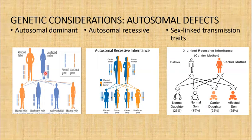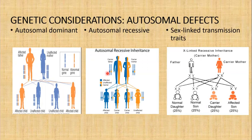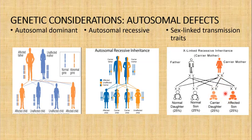For autosomal recessive conditions, it requires the transmission of the abnormal gene from both parents. Both are carrier parents for expression of a disease condition in the fetus. Autosomal recessive conditions include cystic fibrosis and sickle cell disease. For sex-linked transmission traits, the trait is carried on the X chromosome and may be dominant or recessive, though recessive is more prevalent. Disease conditions that are X-linked include hemophilia and colorblindness.